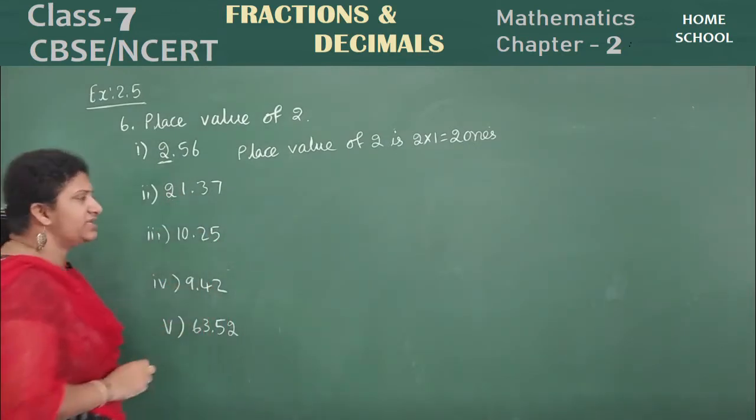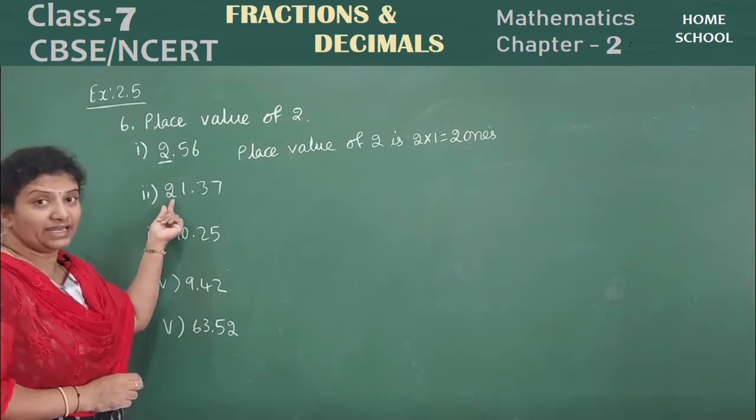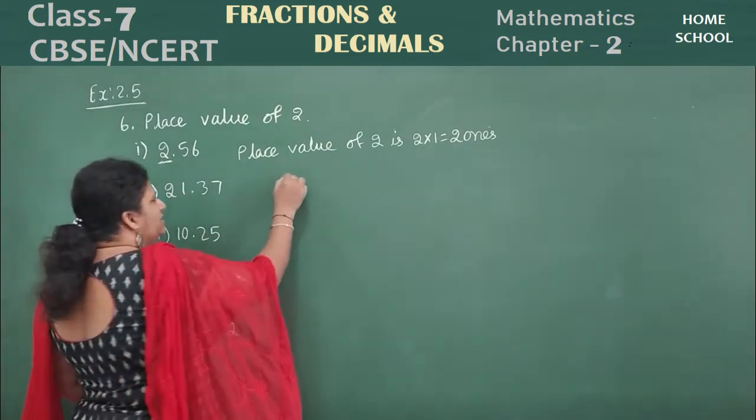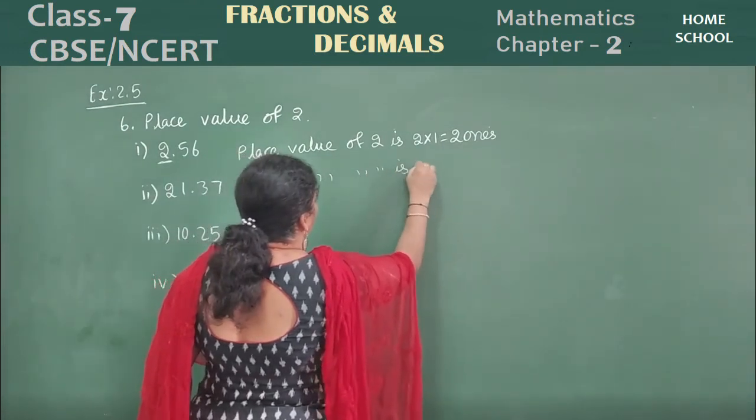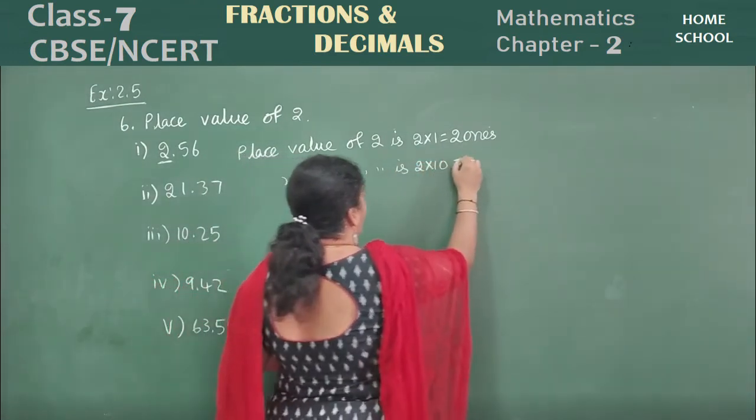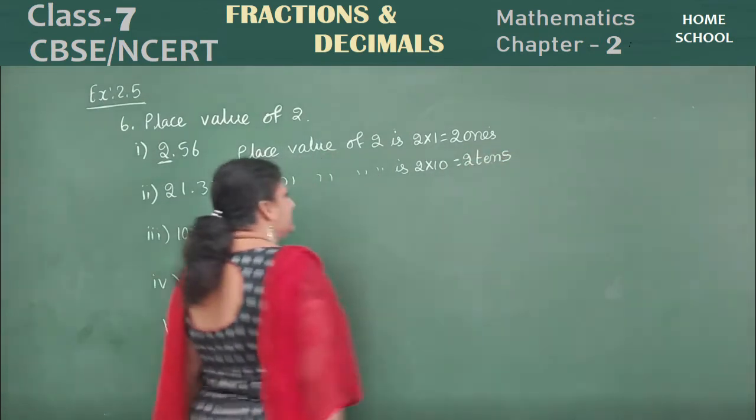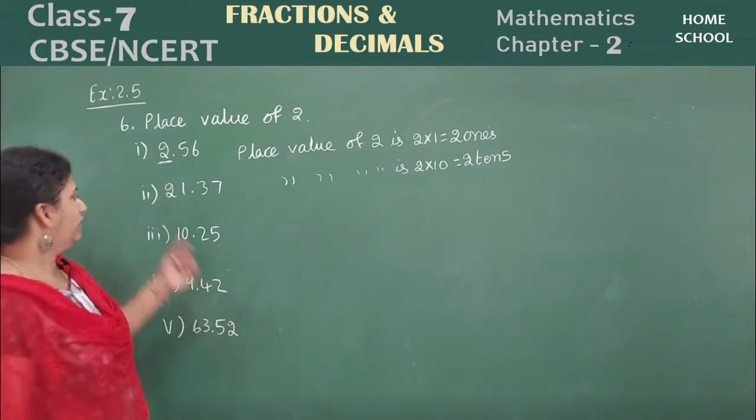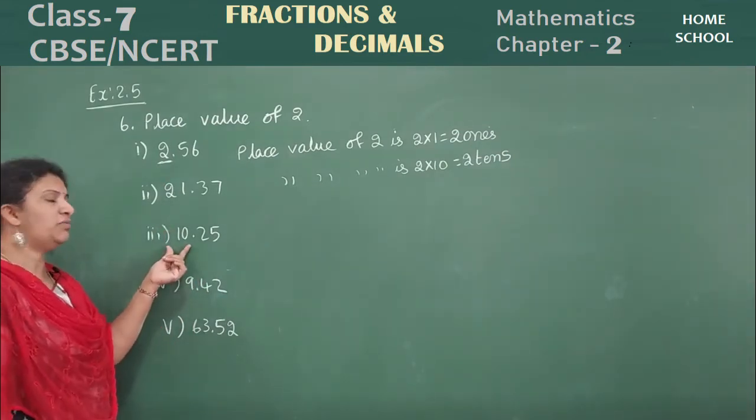Next one, 2 is in which place? In 21.37, 2 is in tens place. That means place value of 2 is 2 into 10. That is 2 tens place it is. Okay? 20 or 2 tens place you can write.